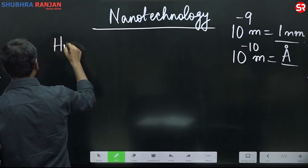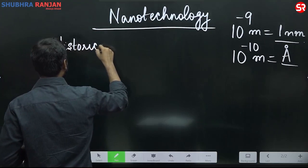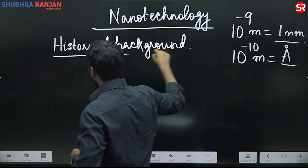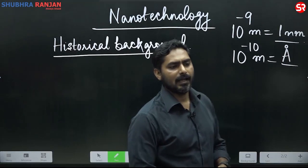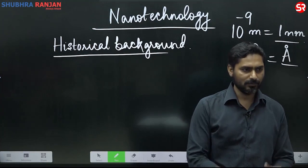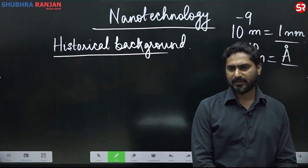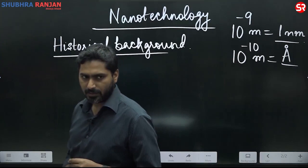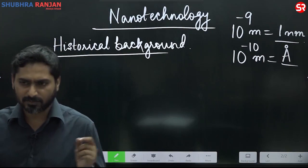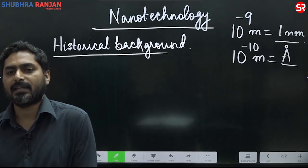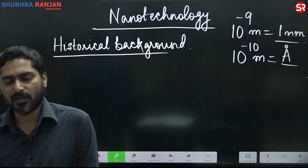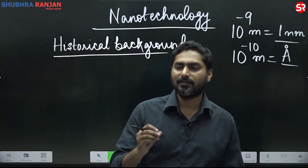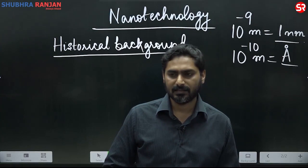Nanotechnology — we will see just the historical background. In the 1960s, there was a physicist known as Richard Feynman. He gave a talk, and the name of that talk was 'There is Plenty of Space at the Bottom,' given in 1959. In this talk, he mentioned that scientists can manipulate individual atoms.